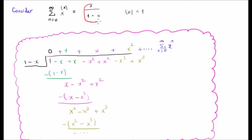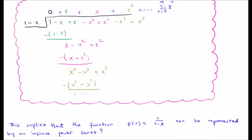Consider the expression 1 over 1 minus x. It can be shown that this has a power series representation: the infinite sum from 0 to infinity of x^n with a radius of convergence where the magnitude of x is less than 1. The point really is that the function 1 over 1 minus x can be represented by an infinite power series. This is quite an important property and we're going to build upon this to discuss the Taylor and Laurent series.